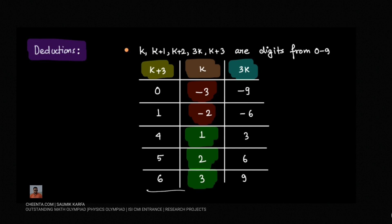There is one more case: if k+3 is 9, then k is going to be 6, and 3k is going to be 18. But 3k needs to be a single digit, so this is also not possible.